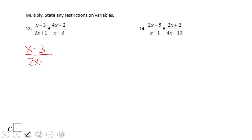So the first rational expression, x minus 3 over 2x plus 1, cannot be factored out. However, if we take a look at the second one, we have 4x plus 2.